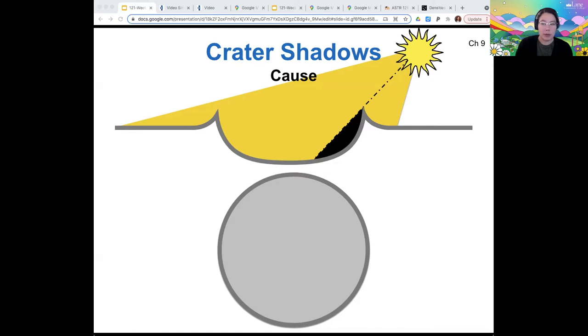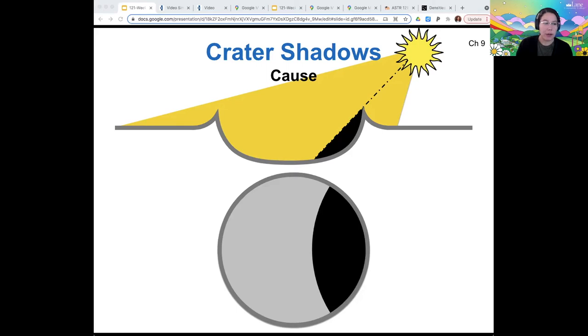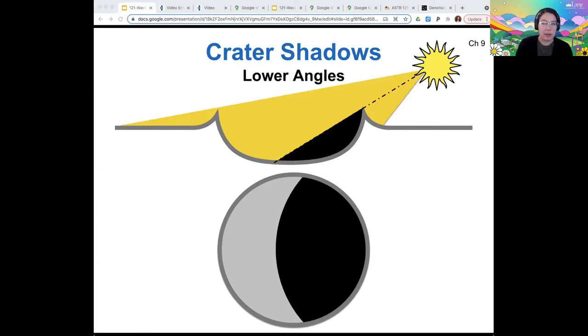So that region is not going to be receiving sunlight. So that would be the region of crater shadow. So how much of the floor is shadowed depends on that angle of the sun.